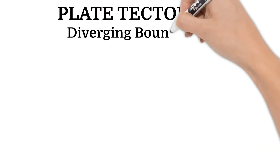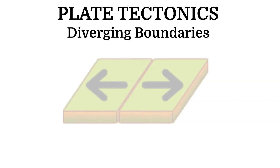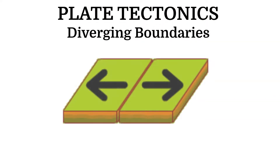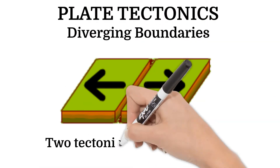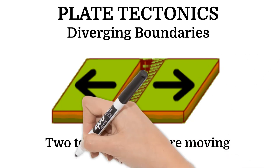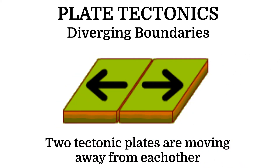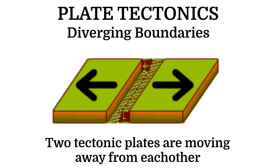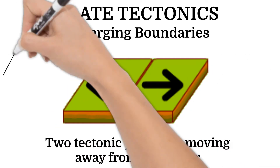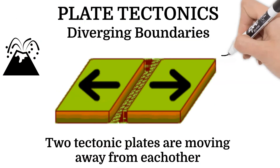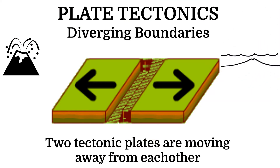Diverging boundaries are where plates move away from each other. Diverging boundaries can cause volcanoes and seafloor spreading.